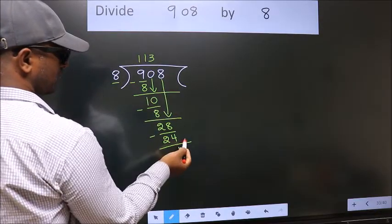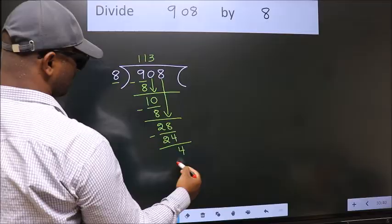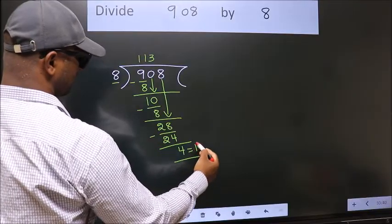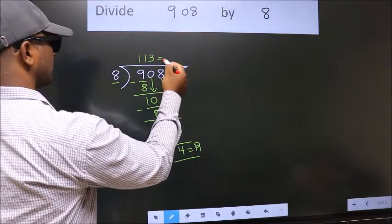No more numbers to bring it down. So, we stop here. This is our remainder. This is our quotient.